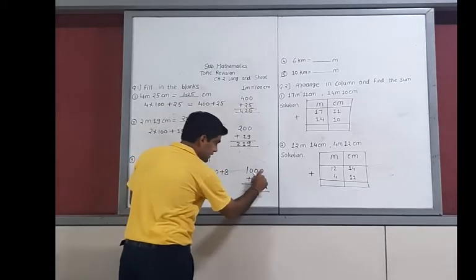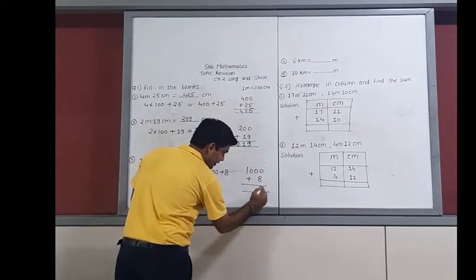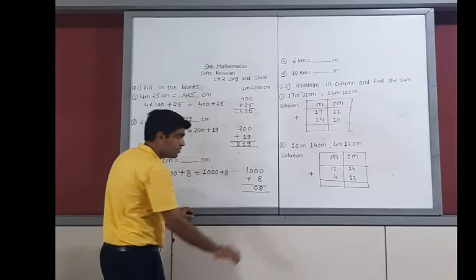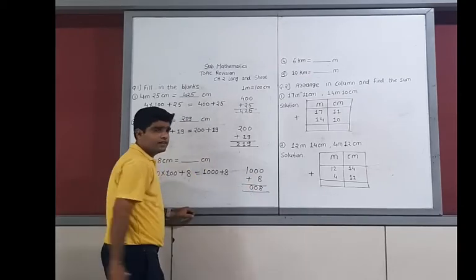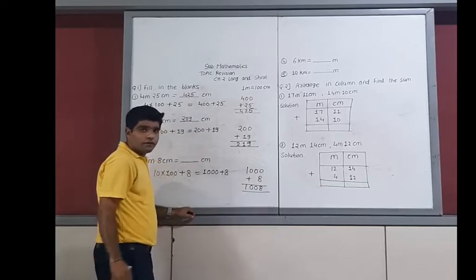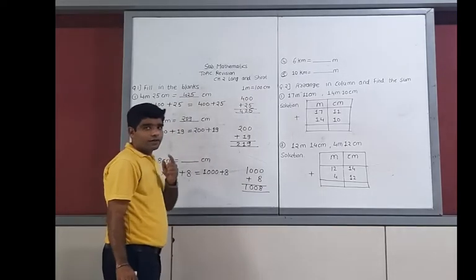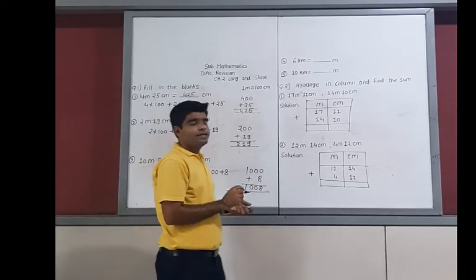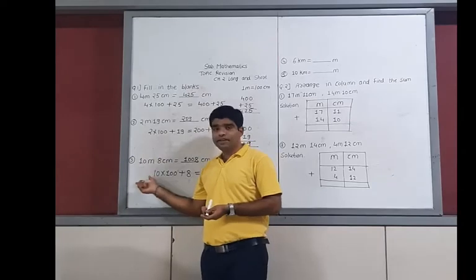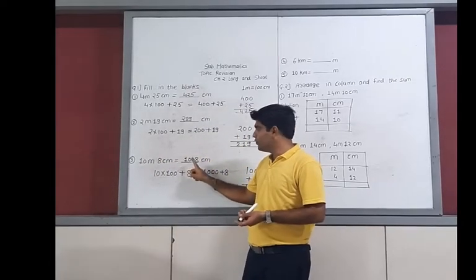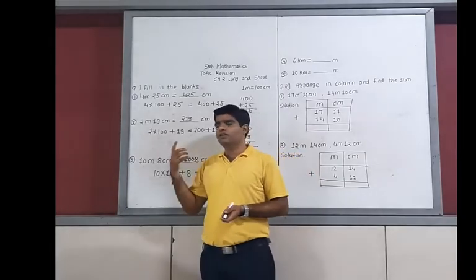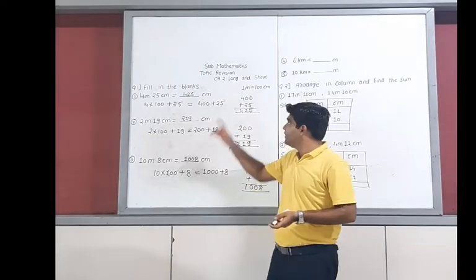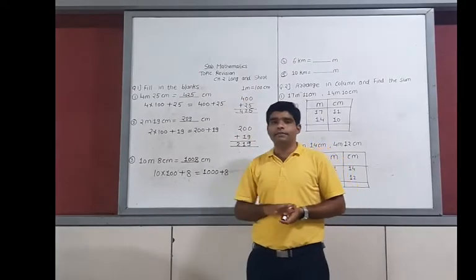Now we solve: 0 plus 8 is 8, then 0 carries, 0 carries, and 1 carries. Your answer is 1008 centimeters. It means 10 meters 8 centimeters is converted into 1008 centimeters. All three examples are based on 1 meter equals 100 centimeters.